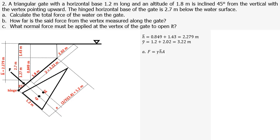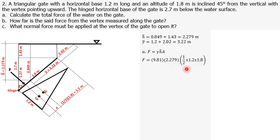For letter A, we solve for total hydrostatic force F = γH̄A. Substituting: γ = 9.81 kN/m³, H-bar = 2.279 m, and area of the triangle = ½ × 1.2 × 1.8. Therefore, F = 24.15 kilonewtons.